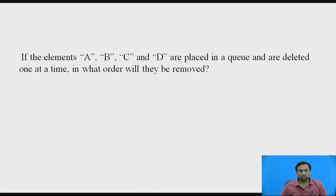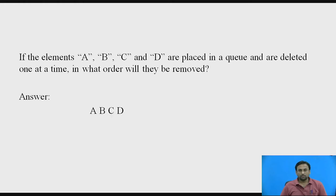Pause this video and answer this question: if the elements A, B, C, and D are placed in the queue and deleted one at a time, in what order will they be removed? The answer is A, B, C, and D — in the same order they were inserted, following FIFO.